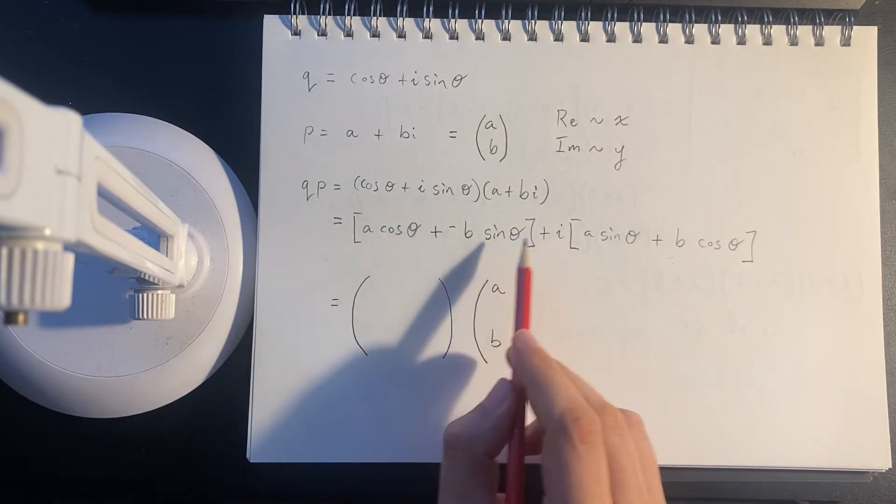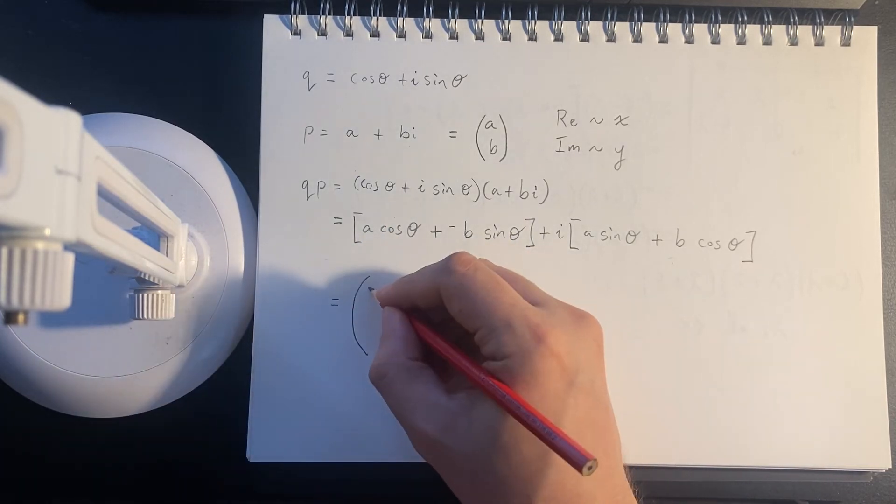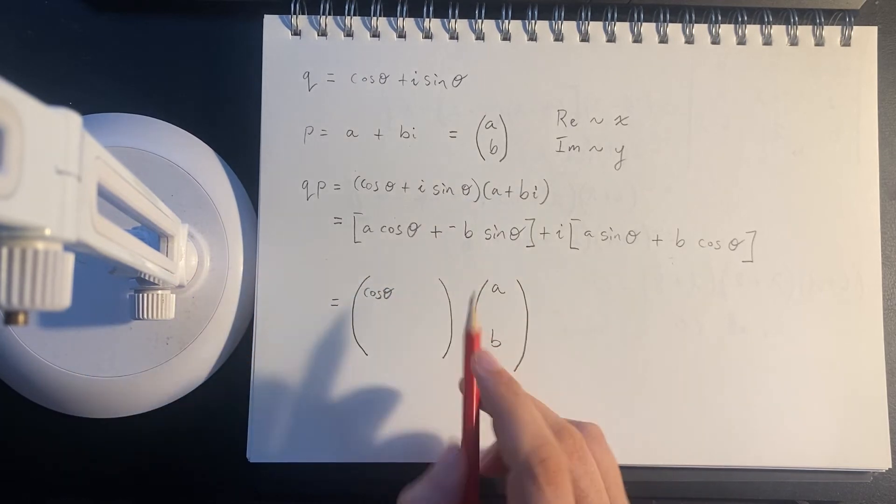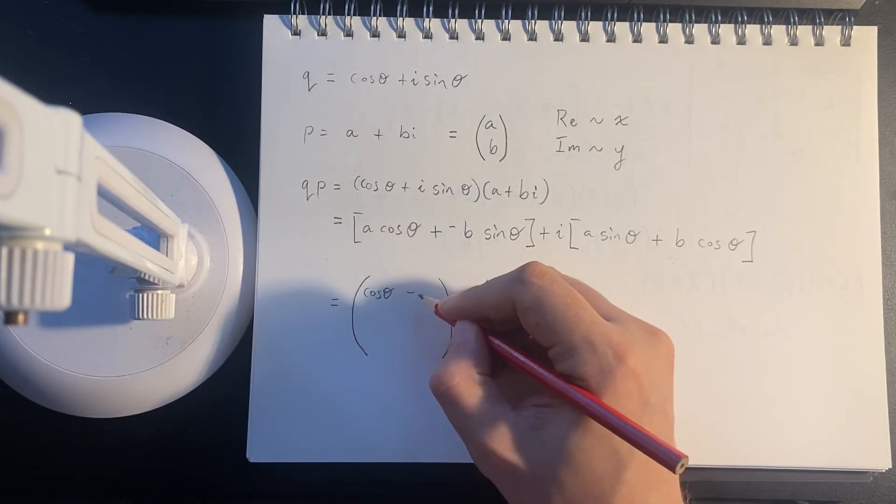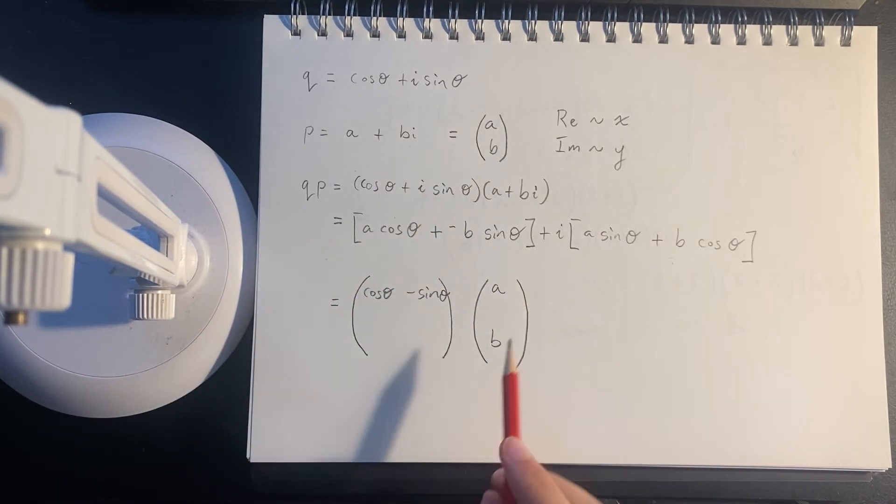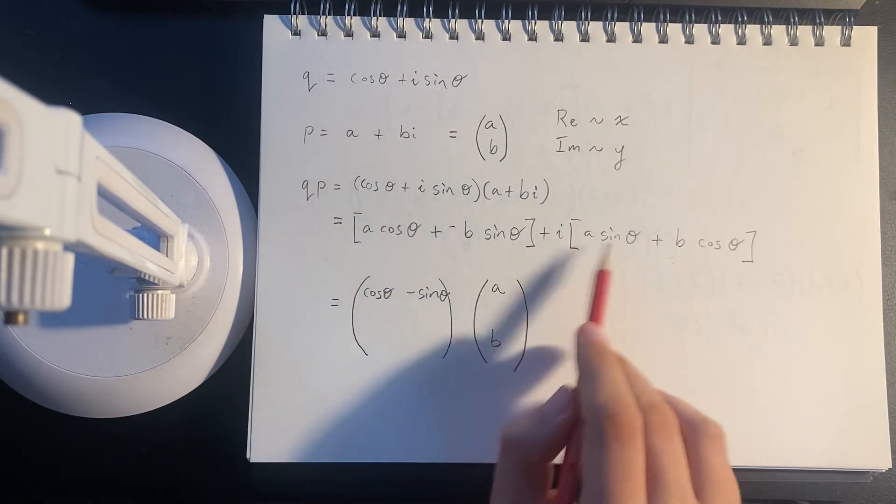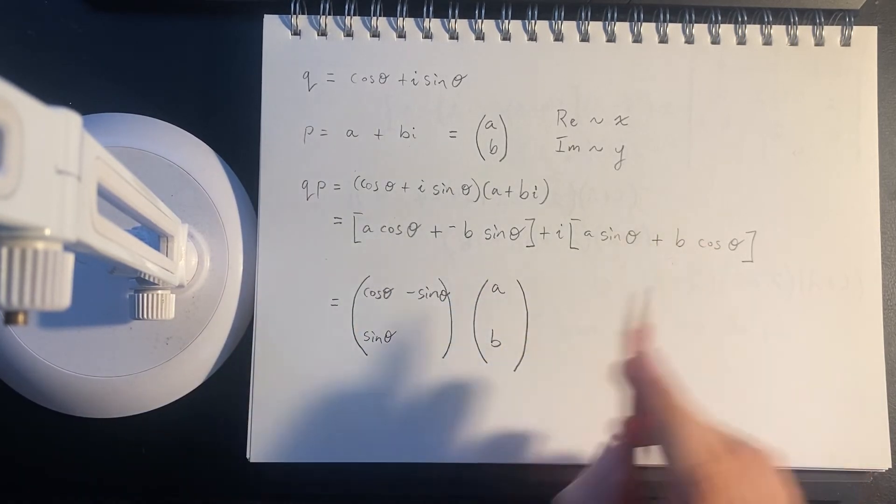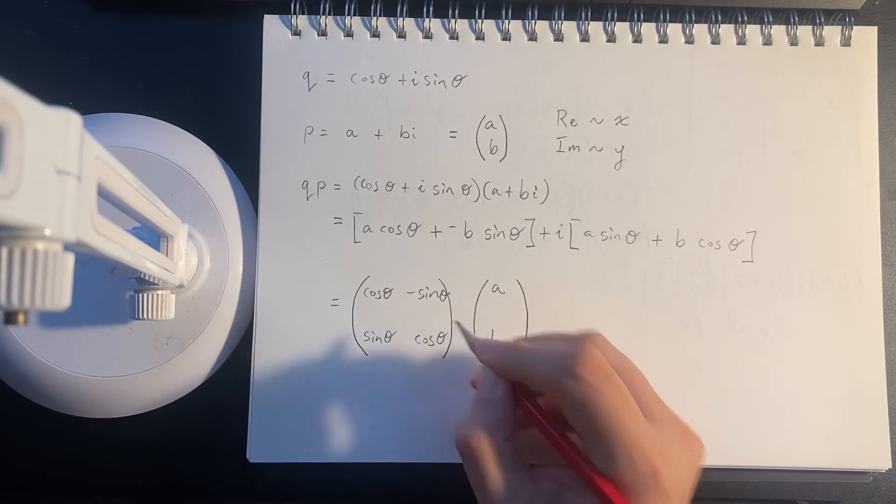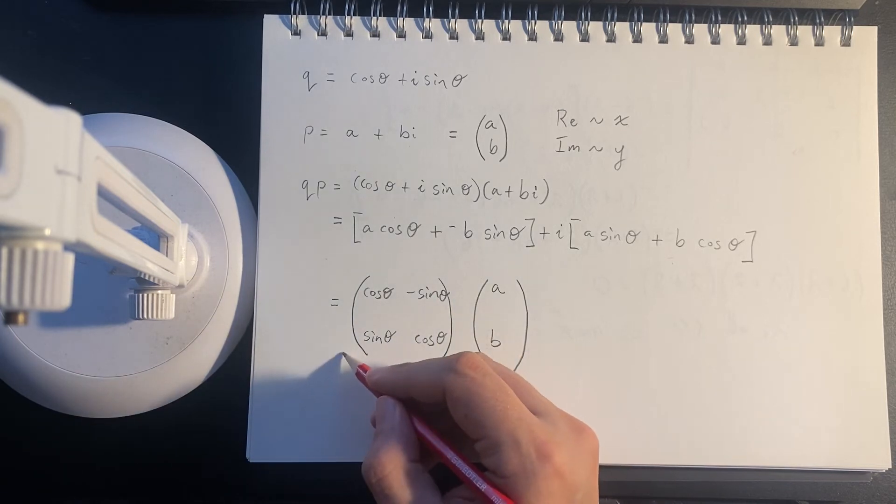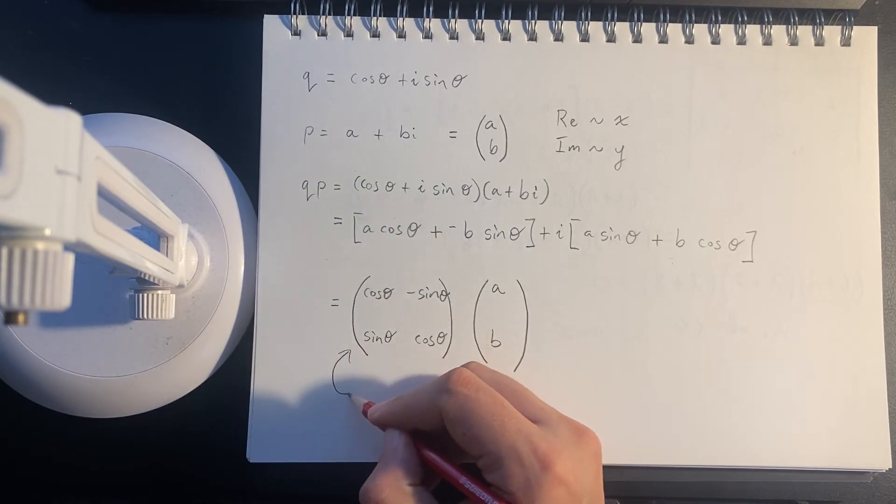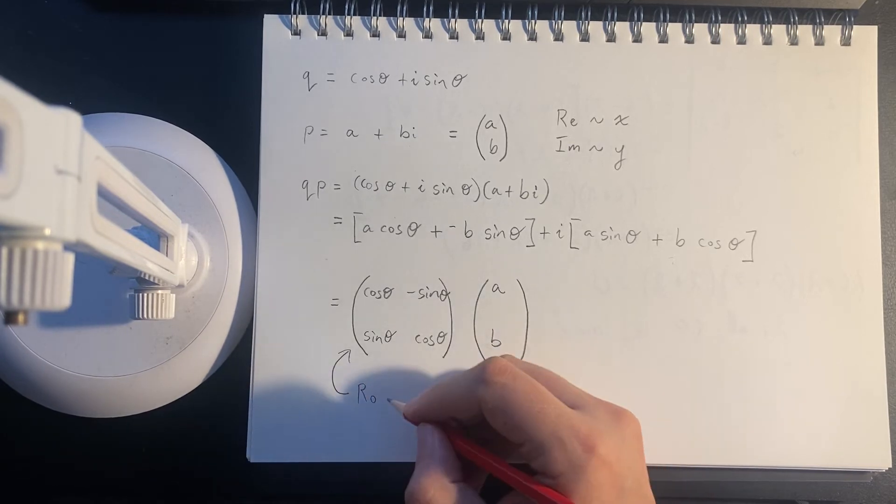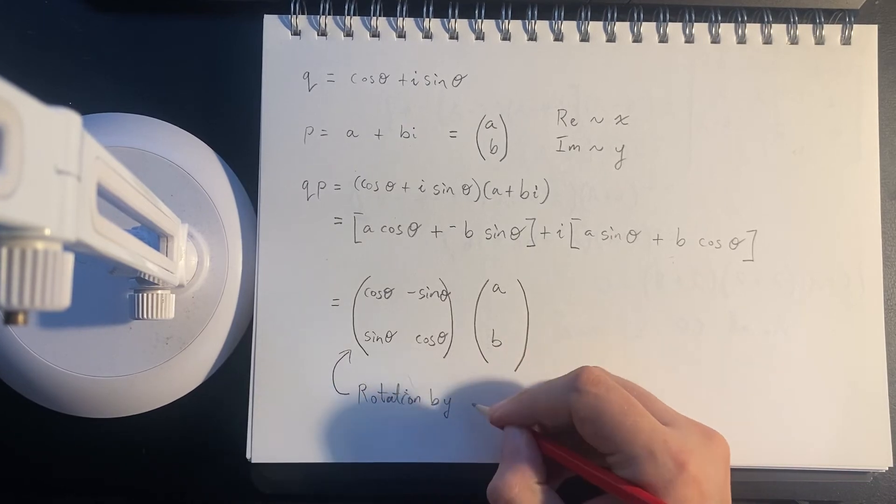So then if we look at the real component of that, it's cos θ times a, and negative sin θ times b, and then, yeah, sin θ times a, and cos θ times b. But then...